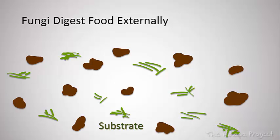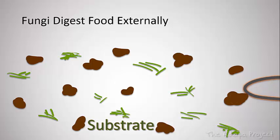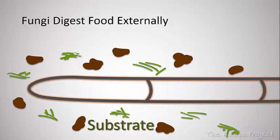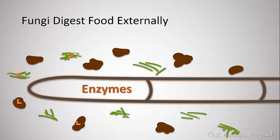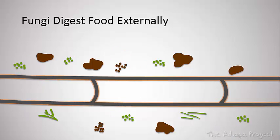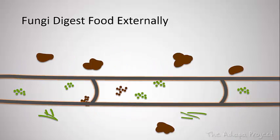Fungi digest food externally. They grow in the substrate and acquire nutrients from their surroundings. At the tip of hyphae, fungi release enzymes which digest the food on the outside. While the food is being digested externally, the hyphae grow and absorb the digested nutrients away from the hyphal tip.